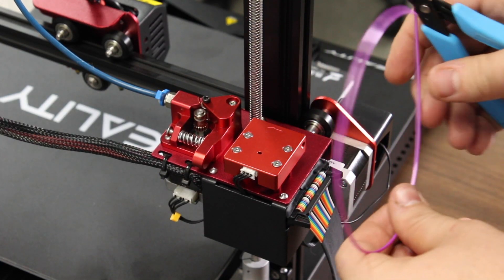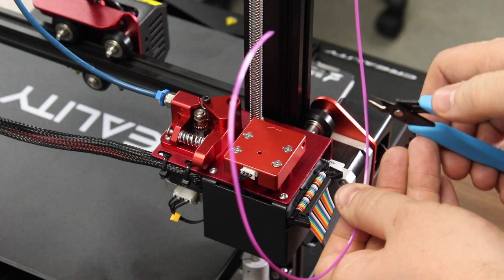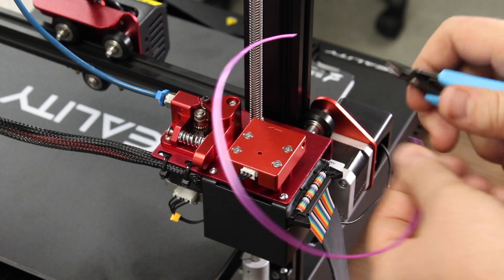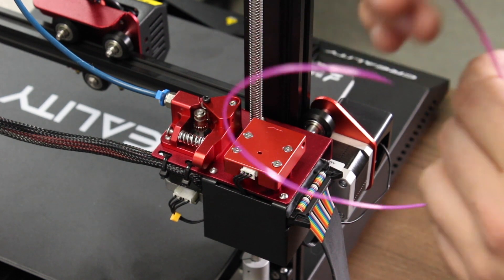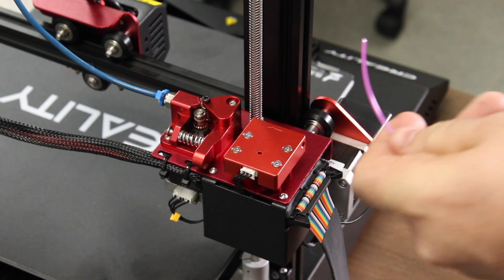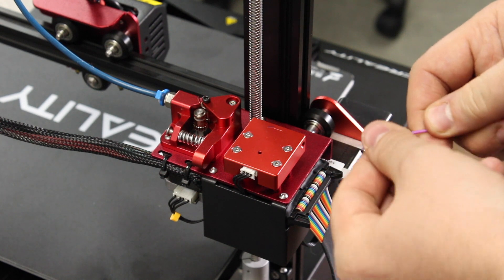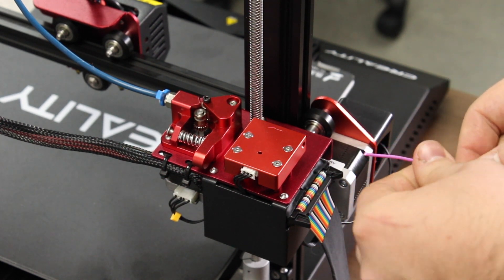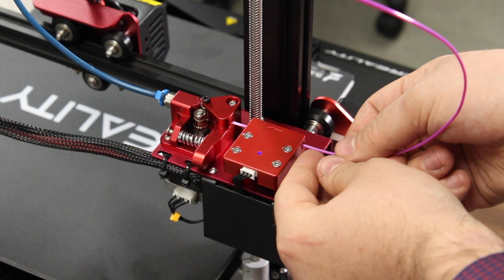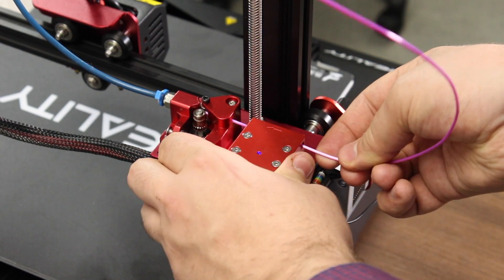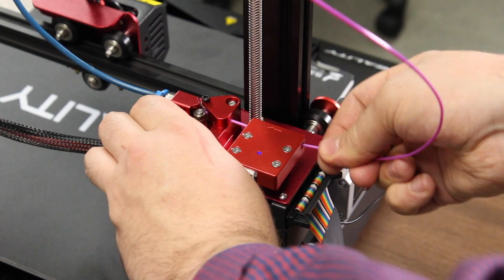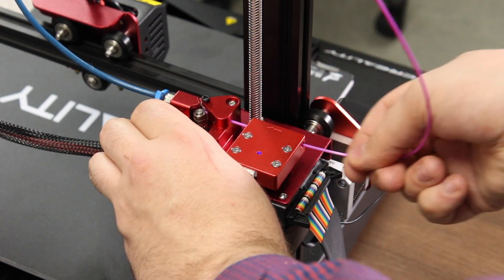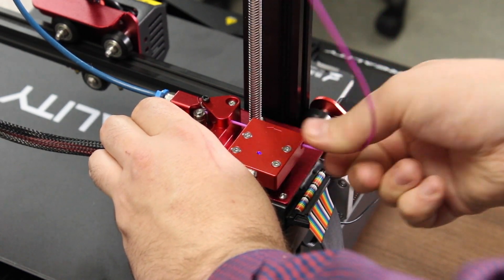After loading your filament onto the spool, take a strand and then take your clippers and cut it at a 45 degree angle. To make sure we're successful here, we're going to take some of the natural bend out of the filament. So take the end and then very slightly curve it so that it becomes straight. Next, you can insert it into the filament sensor and then through into the extruder. Press the extruder arm and the filament should come in nicely. Now your job is to simply push the filament in until you encounter some resistance.